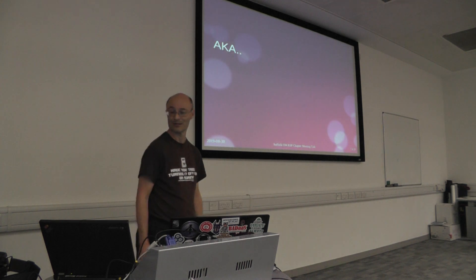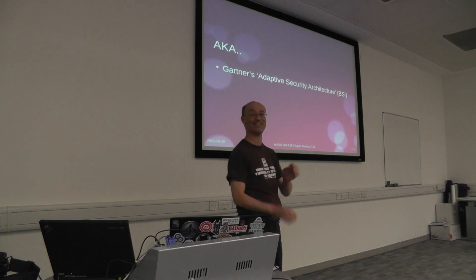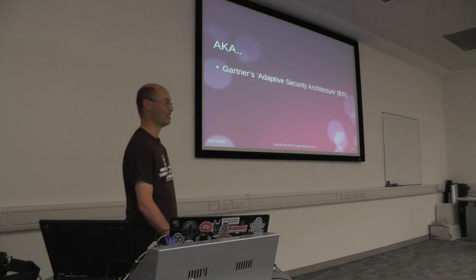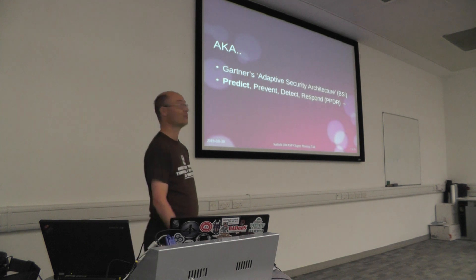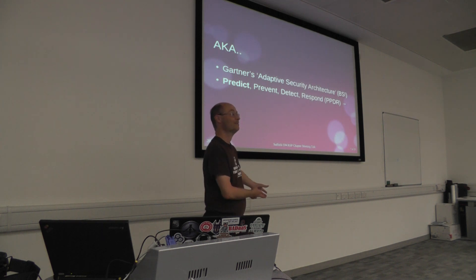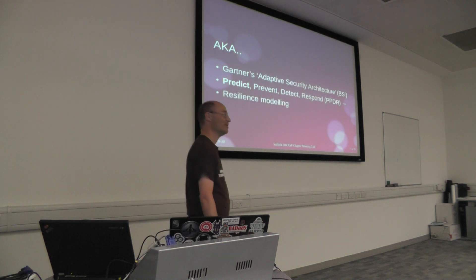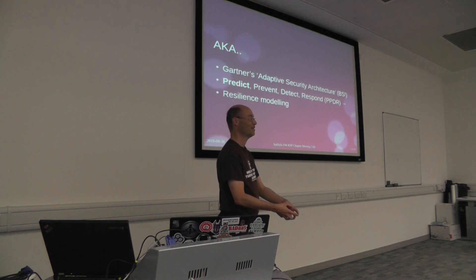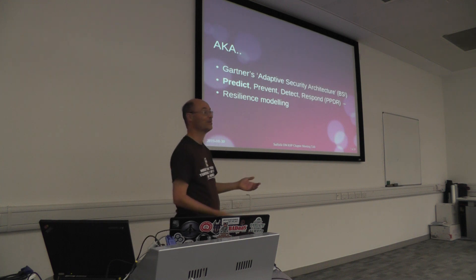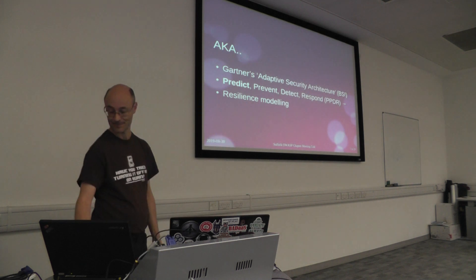There are a few other terms that come up when talking about threat modelling. Gartner's adaptive security architecture — it's a nice term to slap into a search engine; you'll find quite a lot of useful information. There's also the predict, prevent, detect, respond model, popular with CISOs. It's a risk management strategy, and threat modelling is the predict part. My favourite term is resilience modelling — you're trying to get a system to survive the real world. This is being promoted by people like Kelly Shortridge who do a lot of talks on resilience.